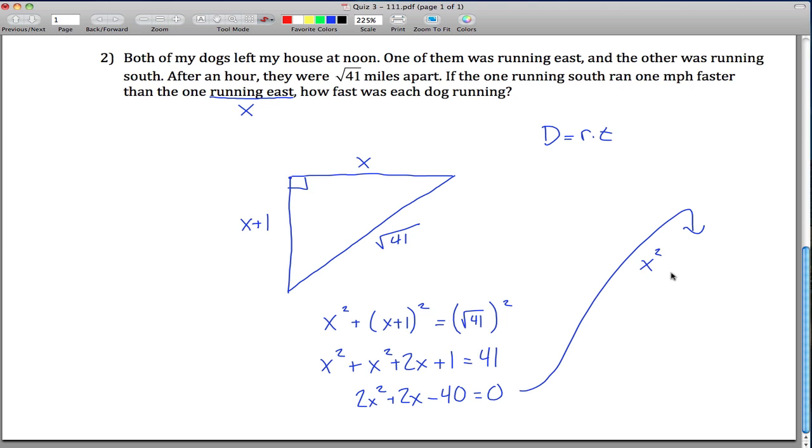So if you divide the left-hand side by 2, you get x squared plus x minus 20. 0 divided by 2 is still 0. And now this is a little bit easier to look at. We hope it factors because we don't want to complete the square again.